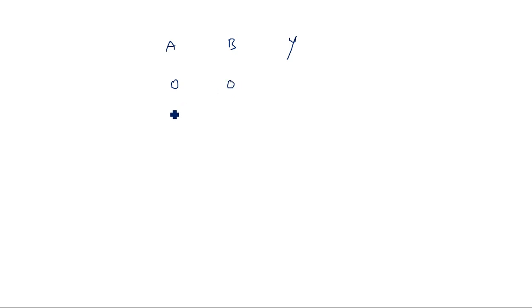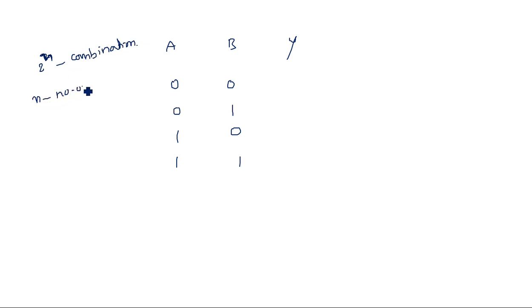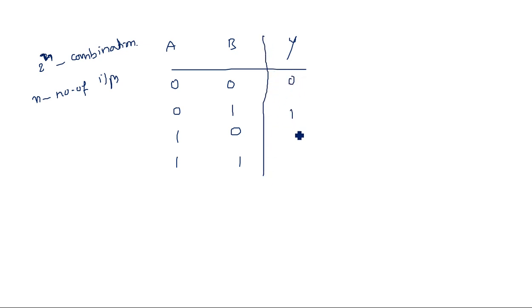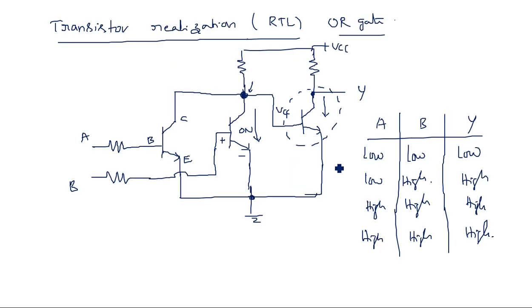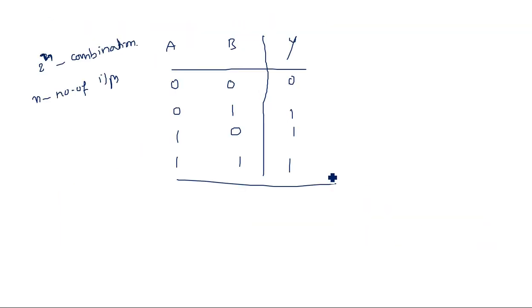In general notation, the truth table for two-input OR gate has inputs A, B and output Y: 0,0 → 0; 0,1 → 1; 1,0 → 1; 1,1 → 1. The number of combinations is 2^N, where N is the number of inputs. For N=2, we get 2^2 = 4 combinations. This is the truth table of the OR gate. So this concludes diode logic (DL) and resistor transistor logic (RTL) realization of the OR gate.